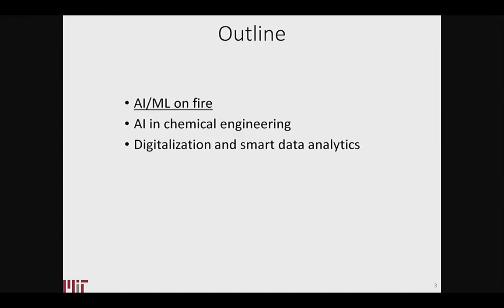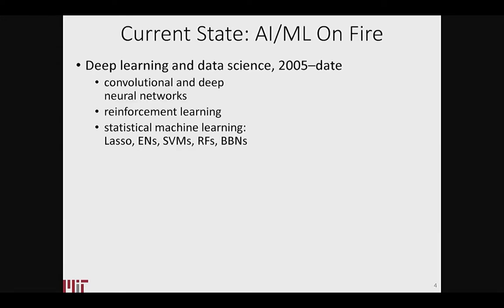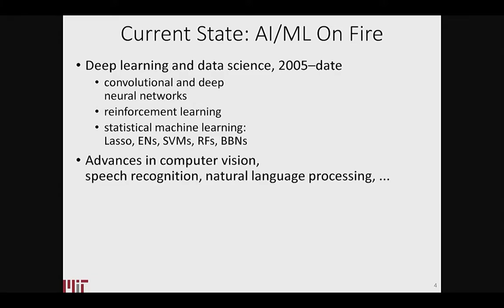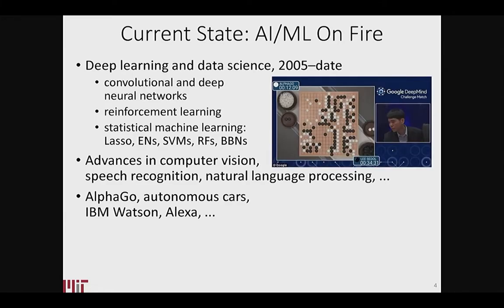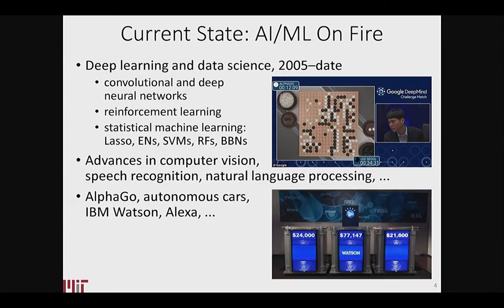AI and machine learning is now a very, very hot field. The current state of deep learning and data science has really massively taken over the world, motivated by advances in computer vision, speech recognition, and natural language processing. There are all these different things — IBM, Go, Alexa, etc. Many of you may have seen where a human lost to Google DeepMind playing a game of Go.